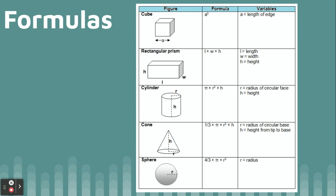A cone is one-third times pi times r squared times h. A cone and a cylinder are a lot alike — a cone is just one-third of the cylinder's volume. And last is the sphere, or a ball, and the formula is four-thirds times pi times r cubed, where r is the radius.